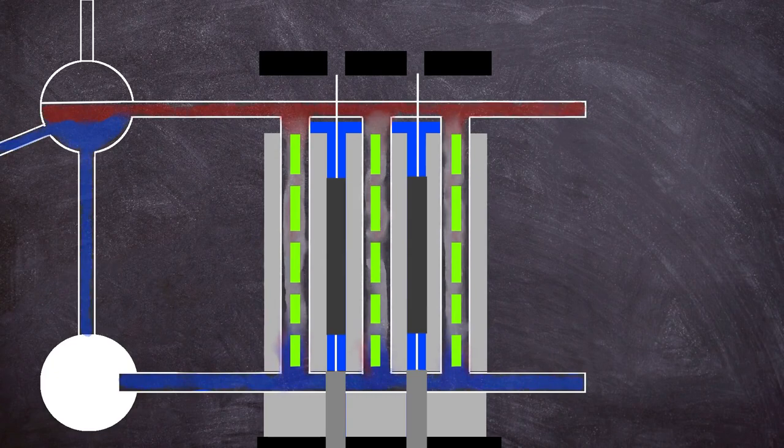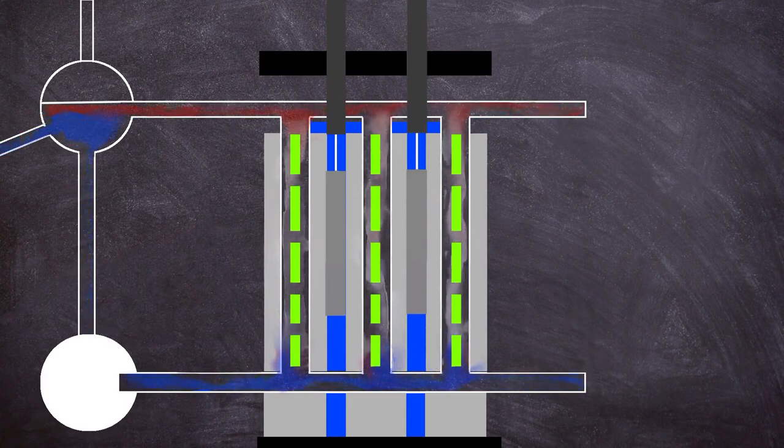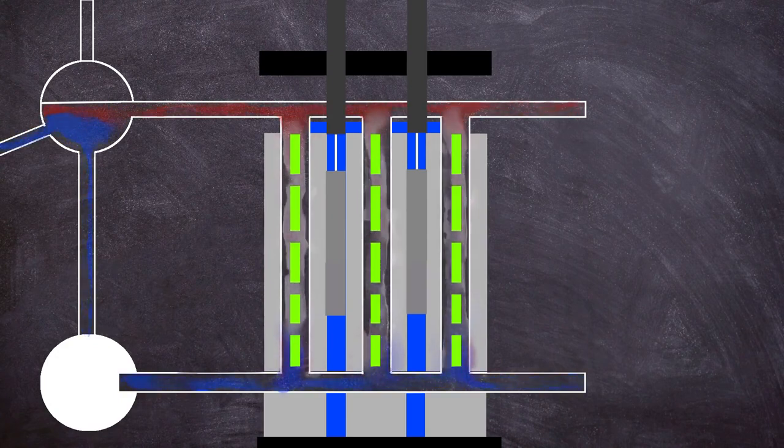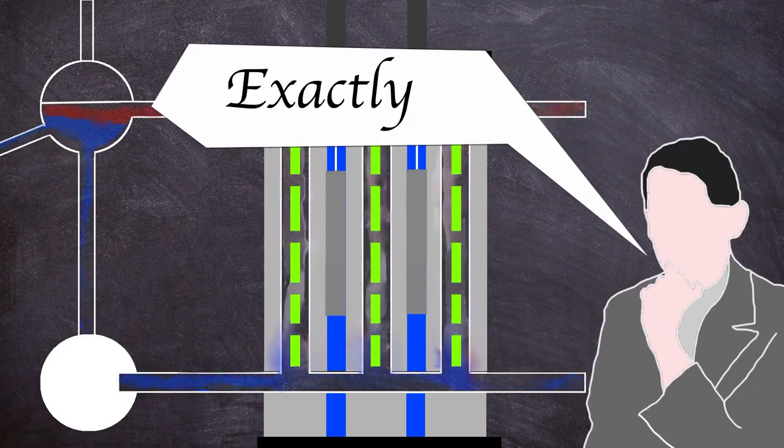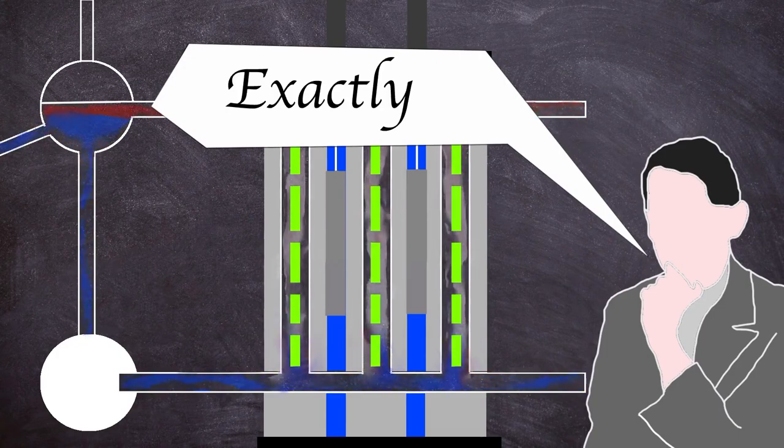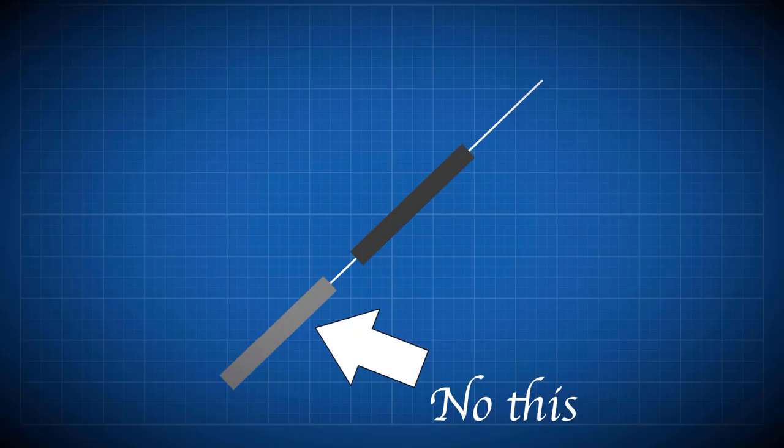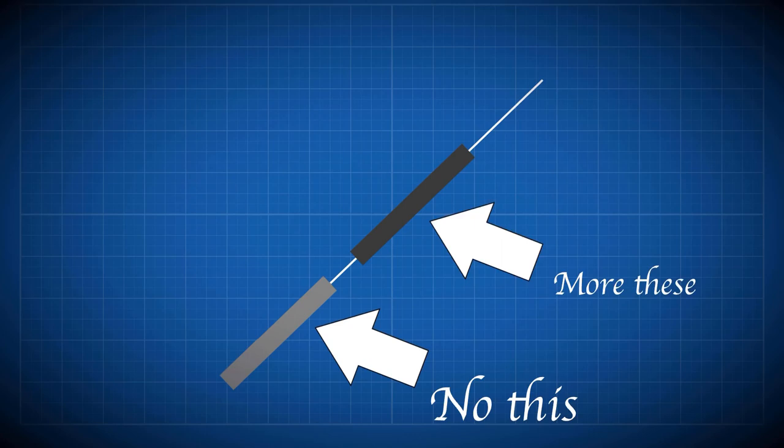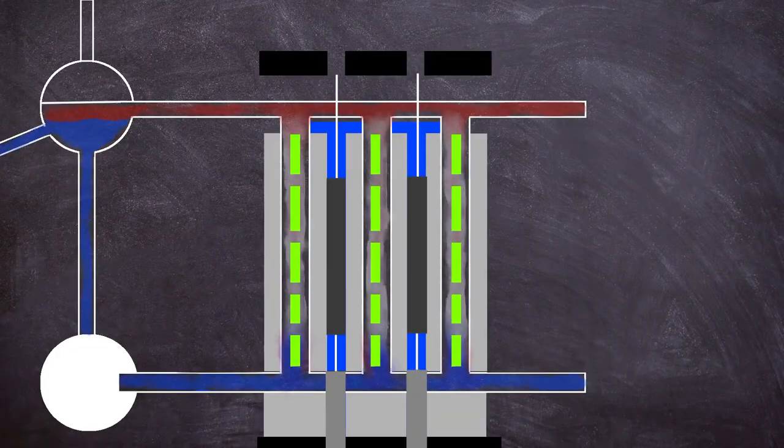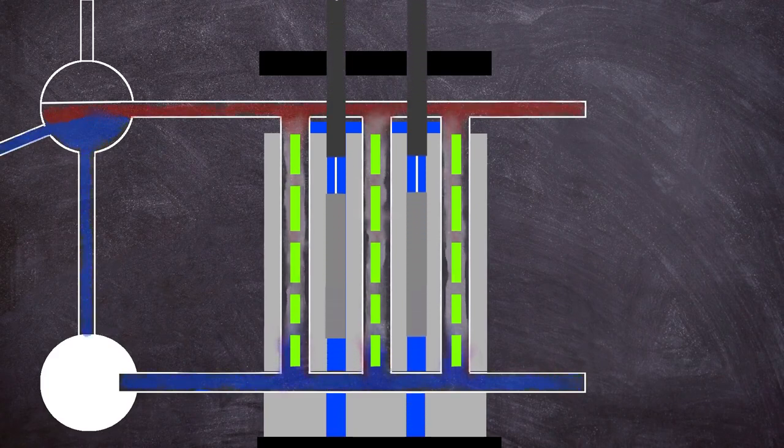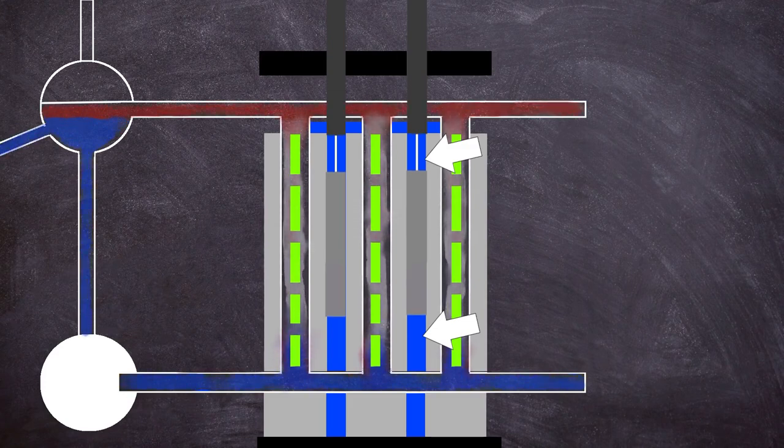This was to stop water filling the space left behind by the control rod after it left the core region, which would parasitically absorb neutrons. Because removing one neutron absorber in the form of a boron control rod to be replaced by another neutron absorber, albeit weaker in the form of H2O, kind of defeats the point of a control rod. Thus if there was no displacer, more control rods would be needed as each one would have less effect on the reactivity of the core. When the control rod was fully extracted, the displacer sat centrally within the fueled region with 1.25 meters of water at either end, but this setup in certain situations could cause a positive scram effect.